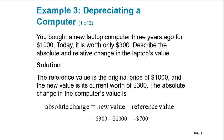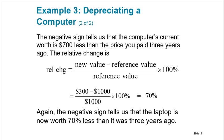You bought a new laptop computer three years ago for $1,000. Today it's worth only $300. Describe the absolute and relative change in value. Well, it went down by $700, so negative $700 is the absolute change — the depreciation. If we take that negative $700 and put it over the starting value of $1,000, then it went down by 70%. It's worth 70% less than it was.